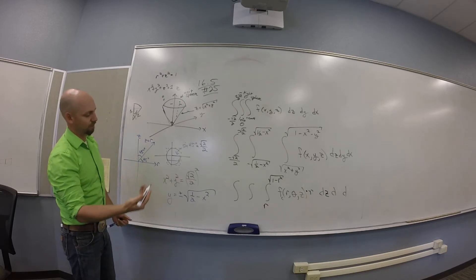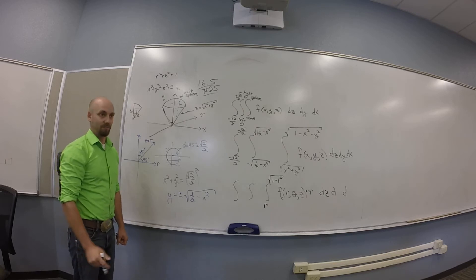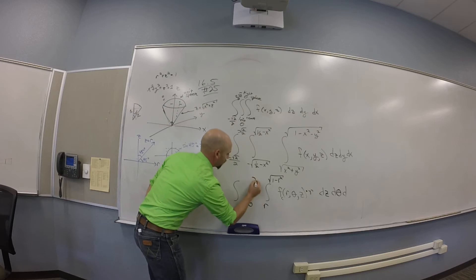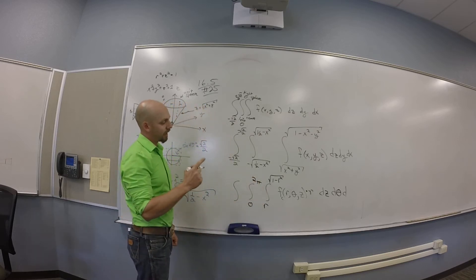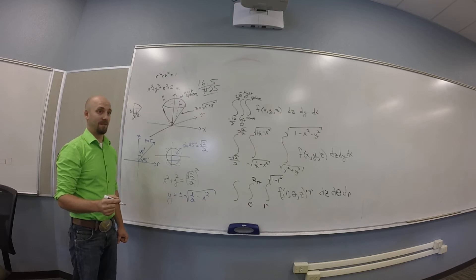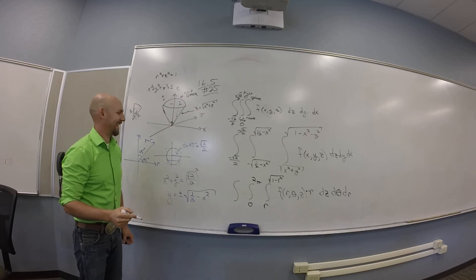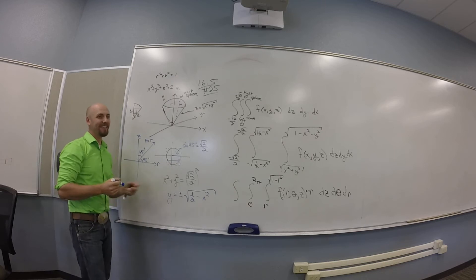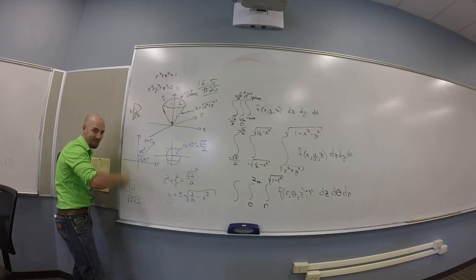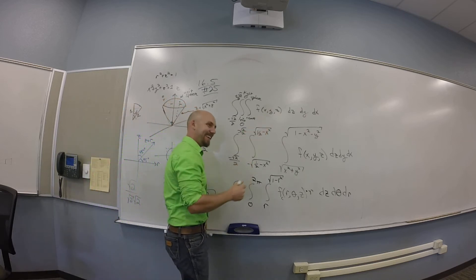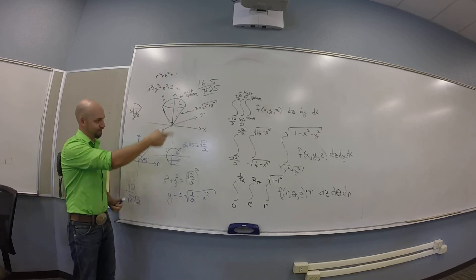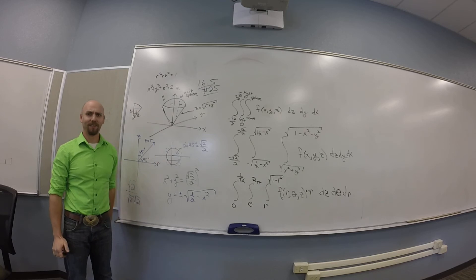Now what's next — thetas or r's? Theta is easy: it's zero to 2π because it's a full circle. For r: we figured out the radius of the circle where the cone meets the sphere. Setting z = r into r² + z² = 1 gives 2r² = 1, so r = 1/√2. The r's go from 0 to 1/√2 (which is the same as √2/2).